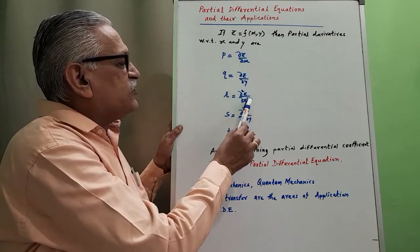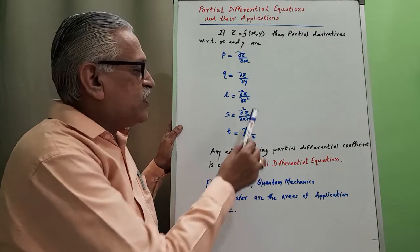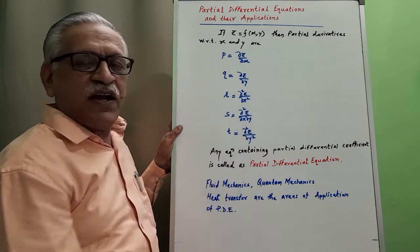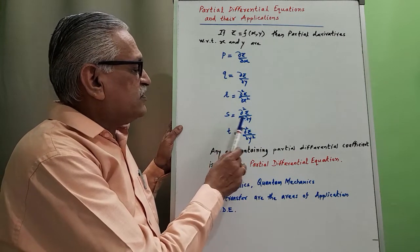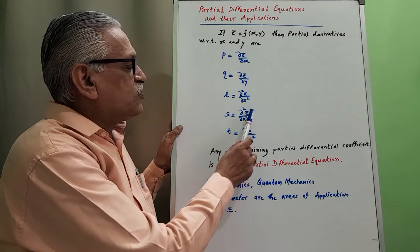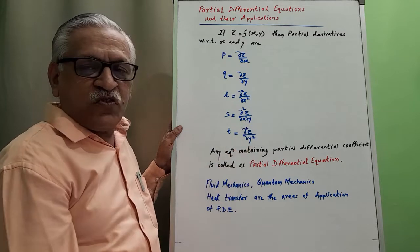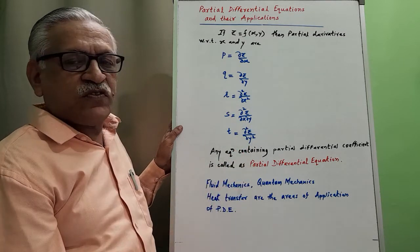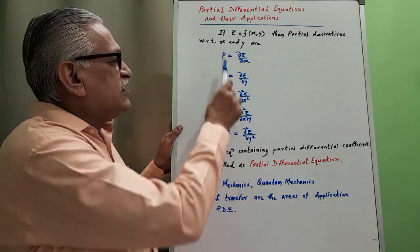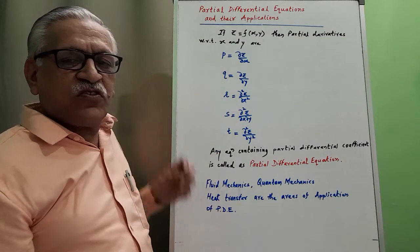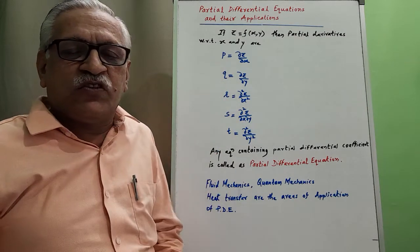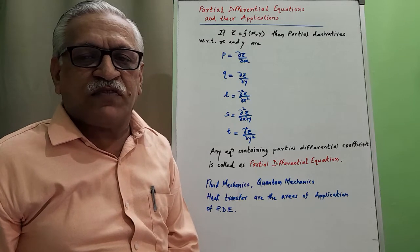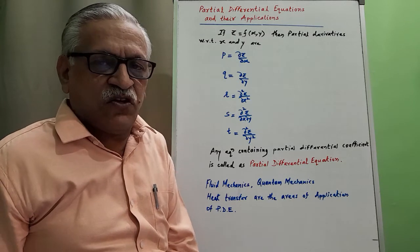For the second derivatives: dou²z by dou x² we denote by r; s as dou²z by dou x dou y; and T as dou²z by dou y². These are the standard notations used to represent partial differential coefficients.